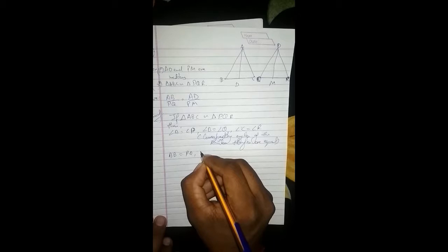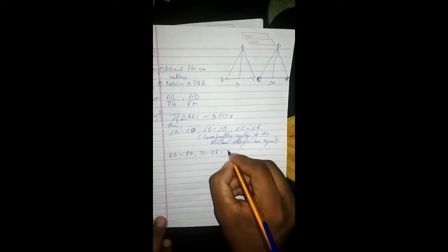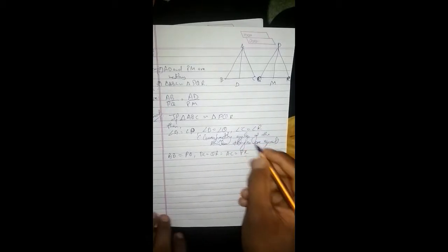AB is equal to PQ, BC is equal to QR, AC is equal to PR.